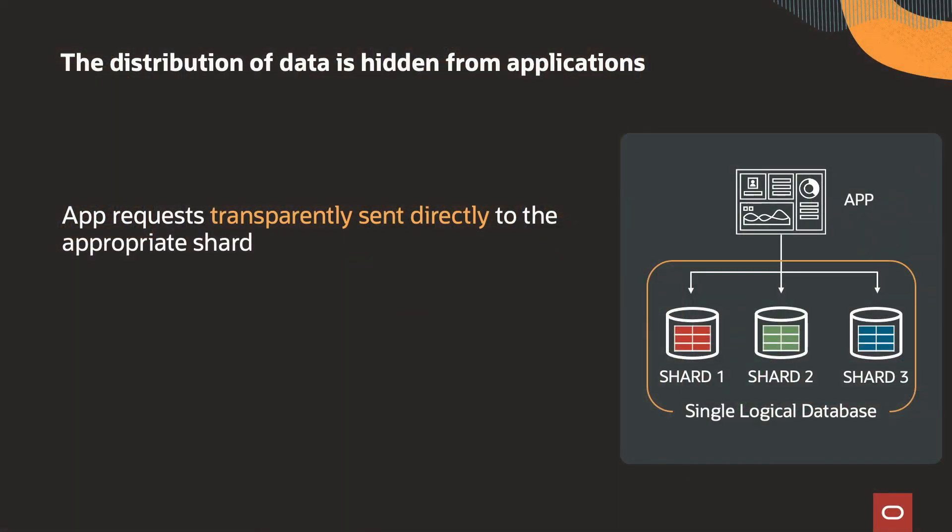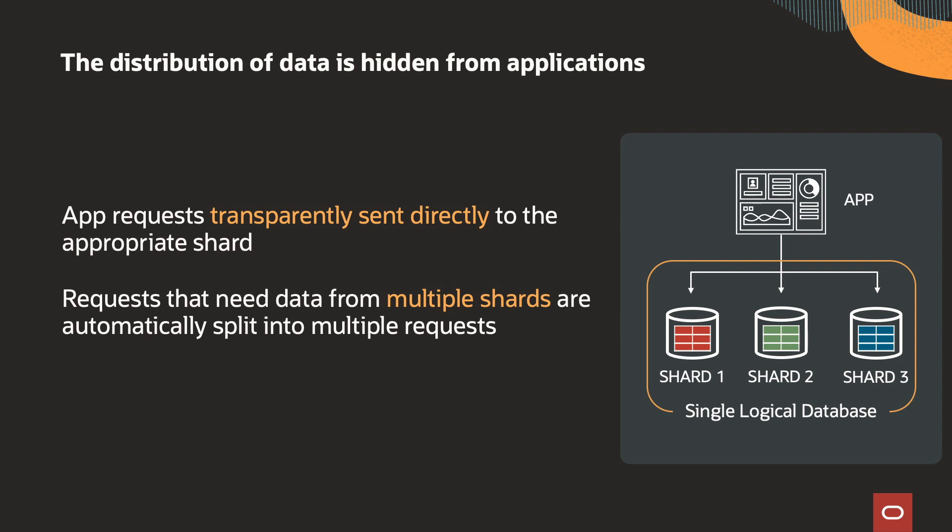Application requests that only need data from a single shard are transparently sent directly to that shard. Requests that need data from multiple shards are automatically split into multiple requests that are sent to the appropriate shards and committed atomically. Queries can be parallelized both within and across shards to implement massively parallel analytics. This is next generation big data done right.